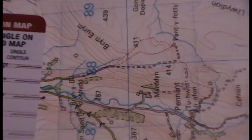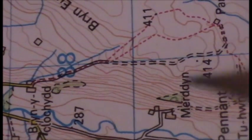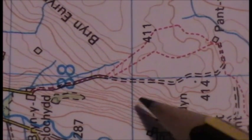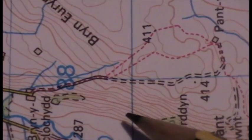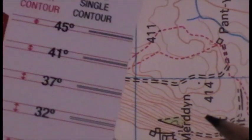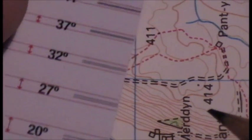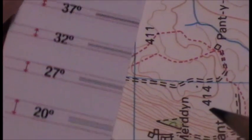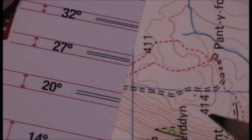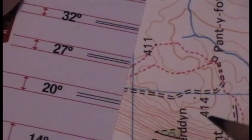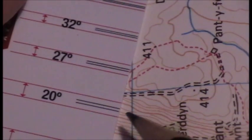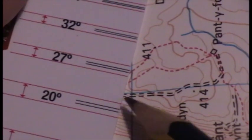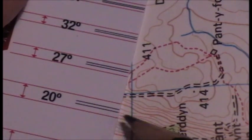If I zoom in a bit you can see them a bit clearer. The index contours are the thicker contour lines you can see there. Now we just run our scale up and down until we get a match — and you can see I've got a match there. The index contour lines match up with this scale here.